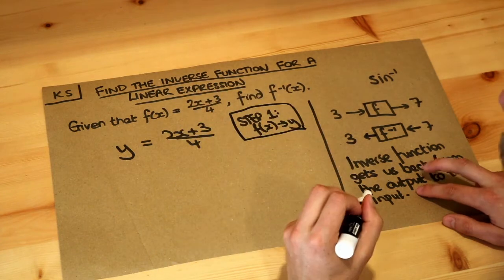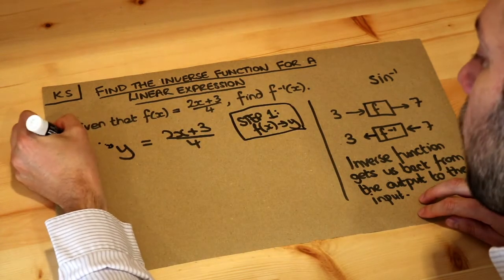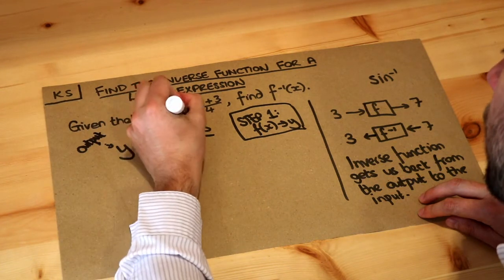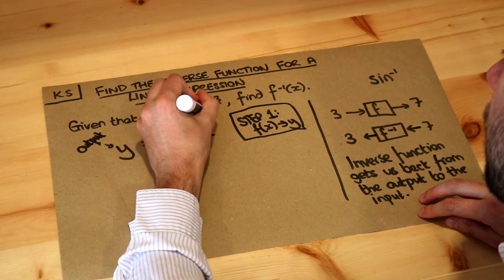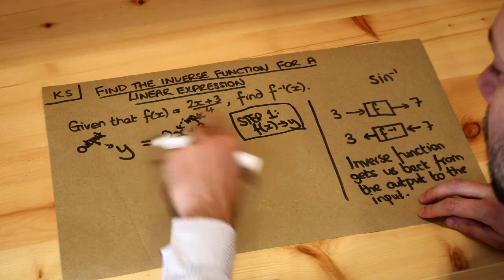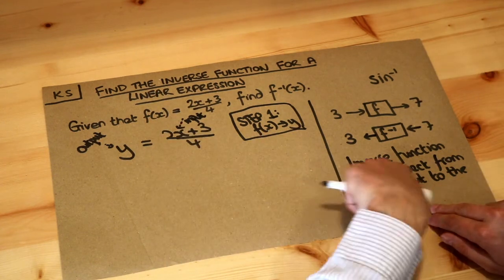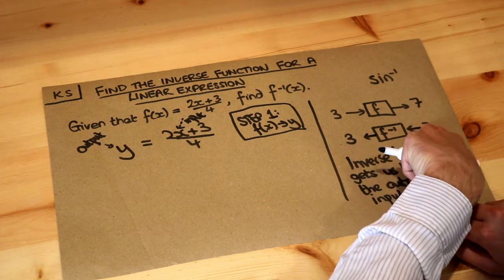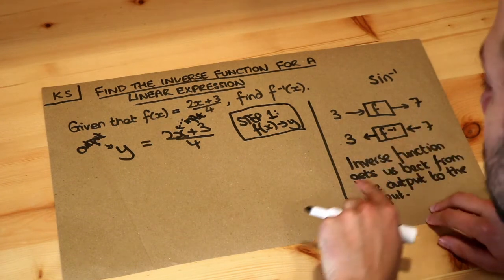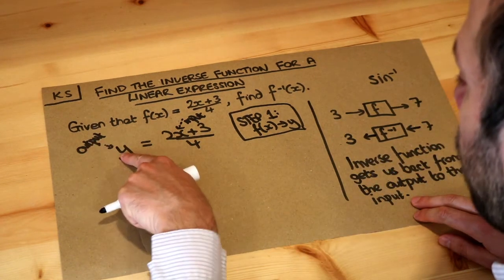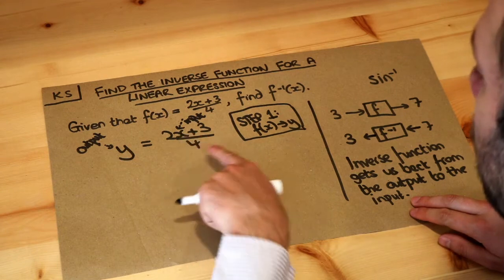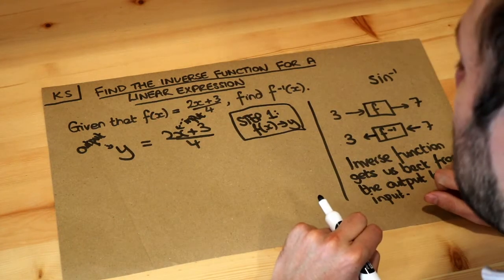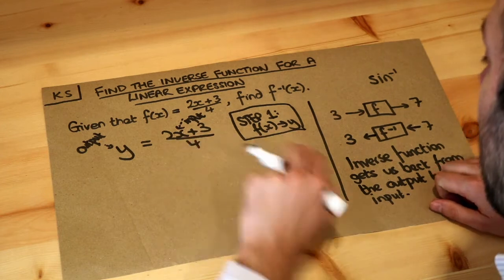Now let's think about what we're doing. This is our output of a function — the f of x — and the x is the input of our function. Remember, x is the input of the function. Now we want to find the inverse function that gets us the input in terms of the output. So if we've currently got the output y in terms of the input x, we want the input x in terms of the output y to do the reverse. So we just need to make x the subject.